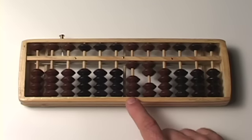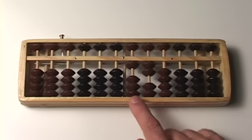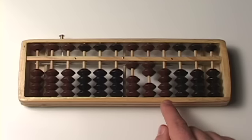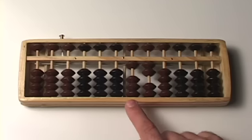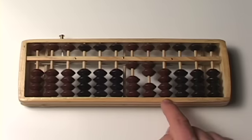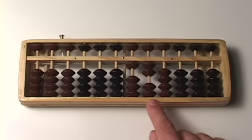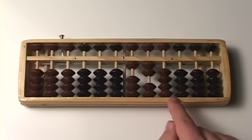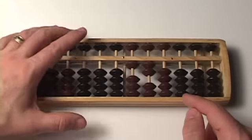245 minus 125 is, well, there's a one here, so that would be 100. There's a two here, so that would be 20. And there's a zero here, so 120. A one, a two, and a zero says 120. So 245 minus 125 is 120.